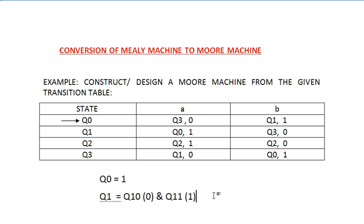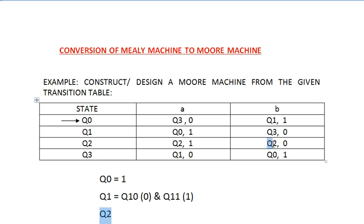Q1 is done. We will implement this new Q1_0 and Q1_1 in the upcoming table. Moving to the next one, Q2 — looking into Q2 in the table, Q2 also has two corresponding outputs. So the same process applies: Q2 will have Q2_0 with output 0, and Q2_1 with output 1.